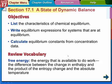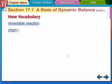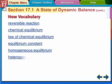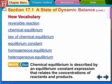So free energy available to do work was from Chapter 15. Now we're going to get to the equilibrium constant. Chemical equilibrium is described by an equilibrium constant expression that relates the concentrations of the reactants and the products. We'll explain more what that means in a minute.